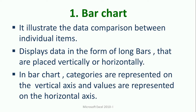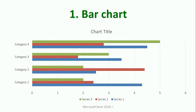The first chart is the bar chart. It illustrates data comparison between individual items. It displays data in the form of long bars placed vertically or horizontally. In a bar chart, categories are represented on the vertical axis and values are represented on the horizontal axis. This can be asked as a true/false question: categories in a bar chart are represented vertically and values on the horizontal axis.